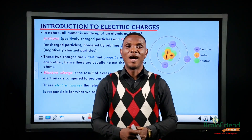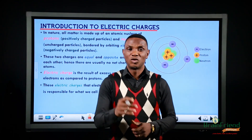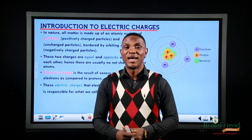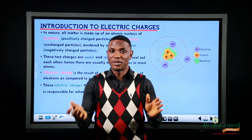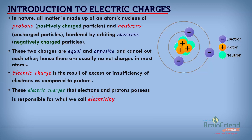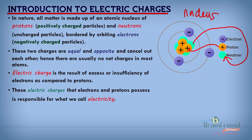Before we go into our class today, I'd like us to remind ourselves of one basic thing — the atom. We learned that the atom is the smallest indivisible part of every particle, so every matter and everything that you can see and touch is made up of atoms. The atom has a centre called the nucleus, which contains two very important particles: the neutron and the proton. We also have electrons that orbit around the nucleus. So we have three basic particles: the electron, the proton, and the neutron.